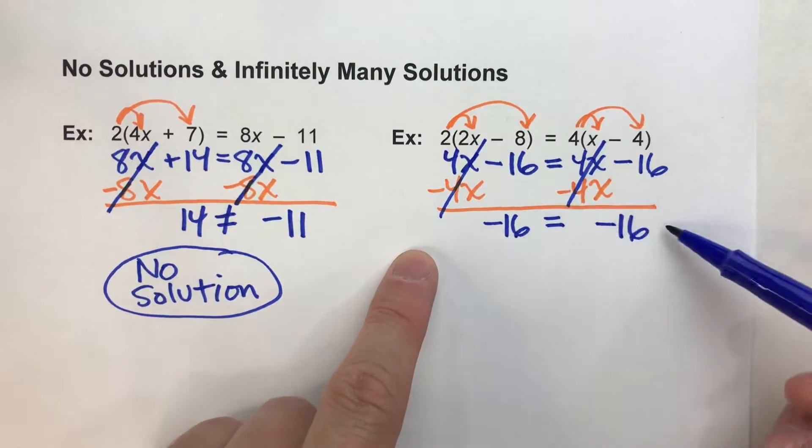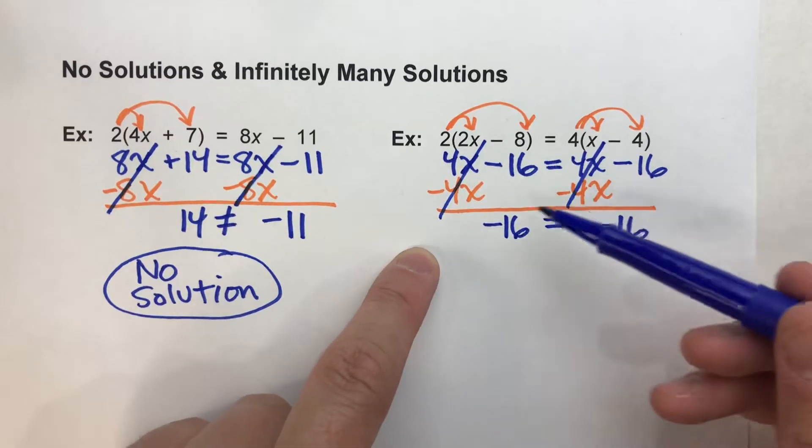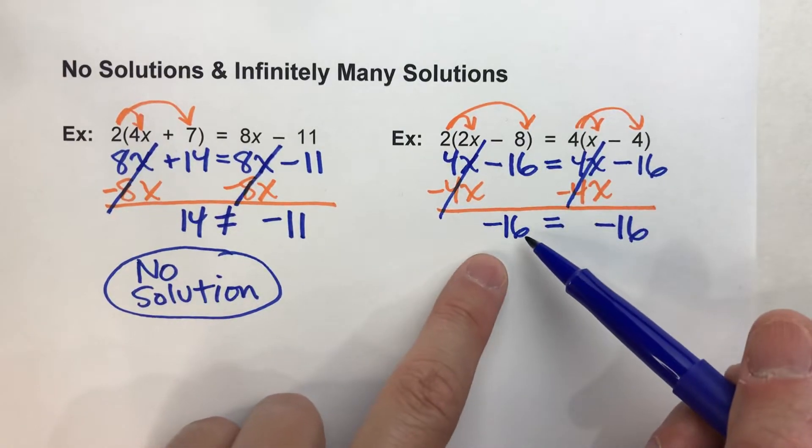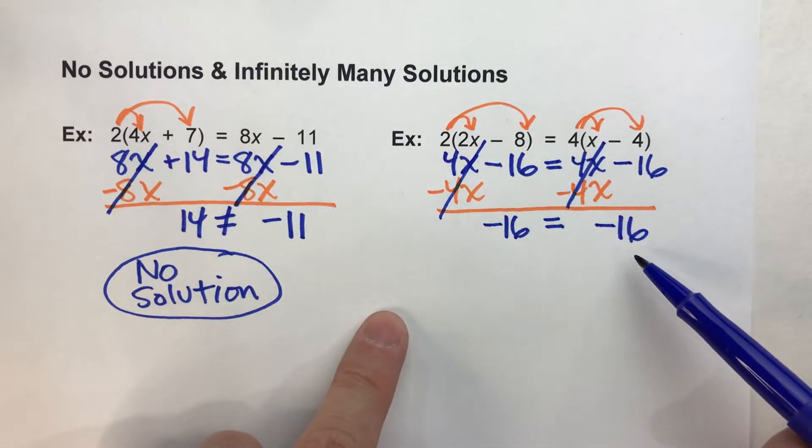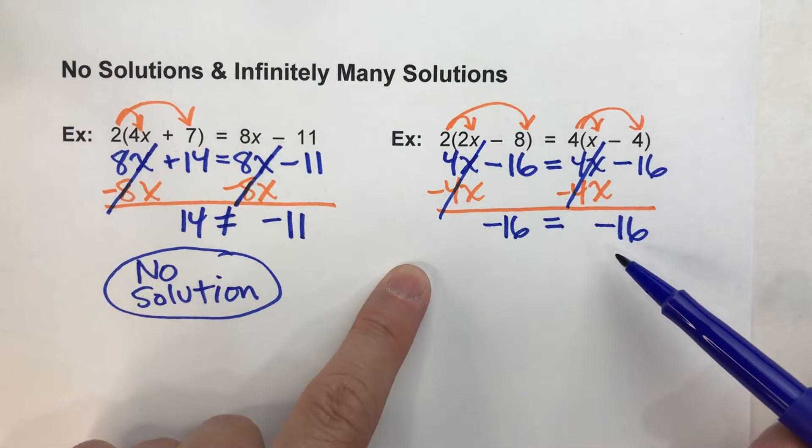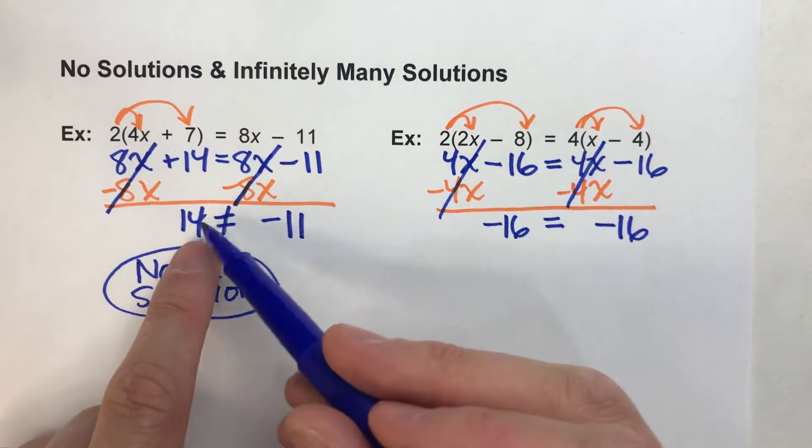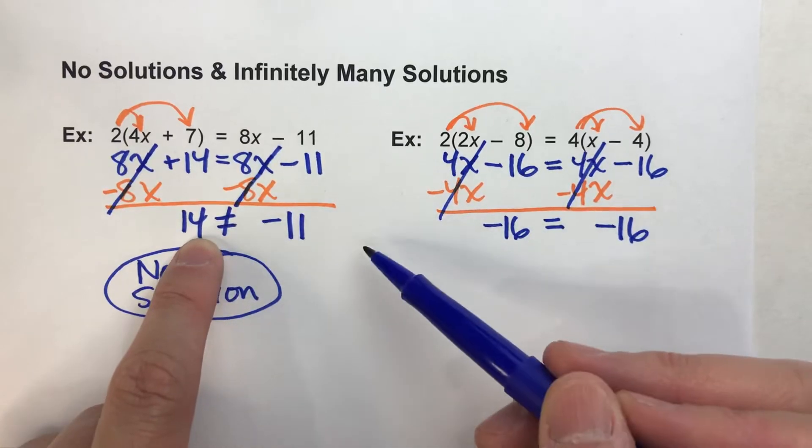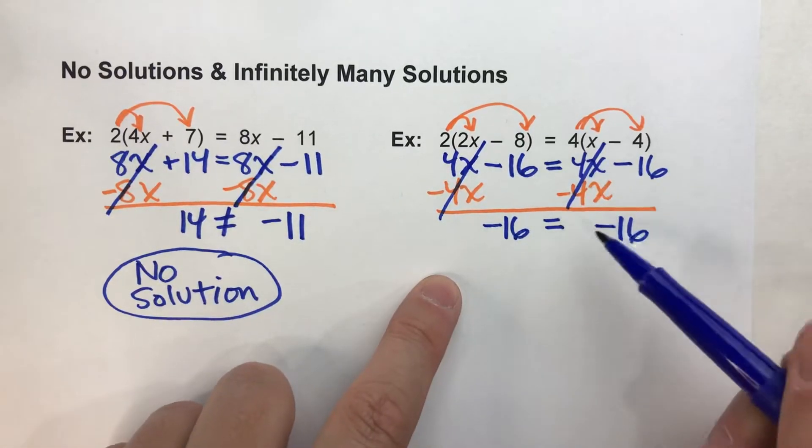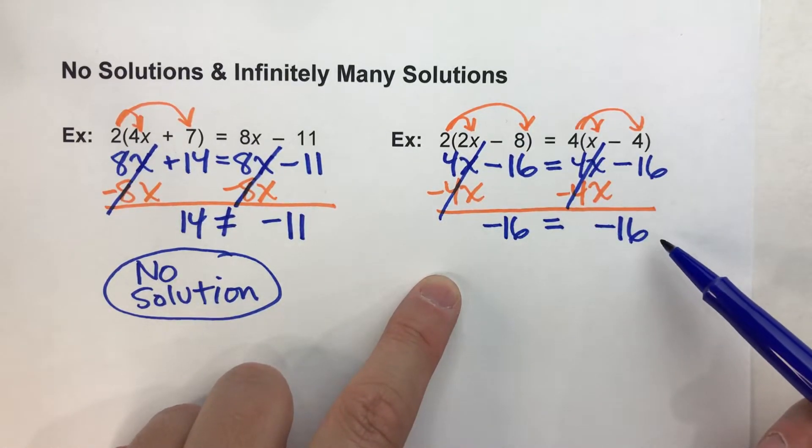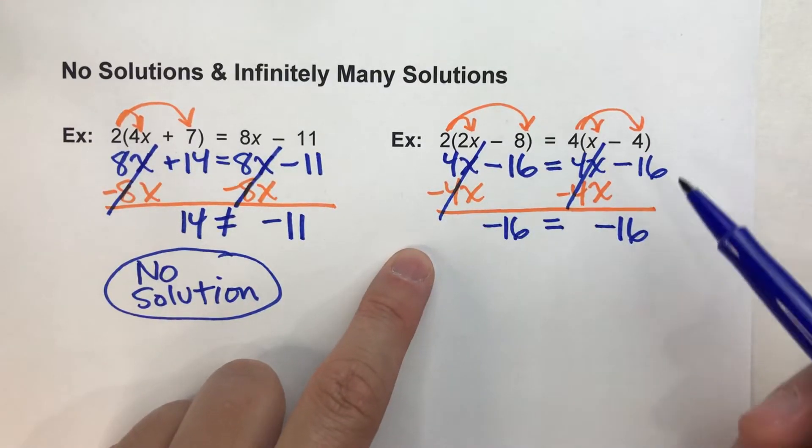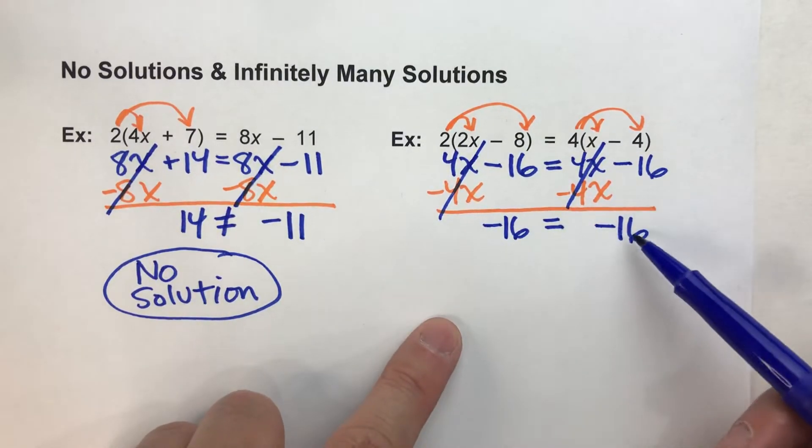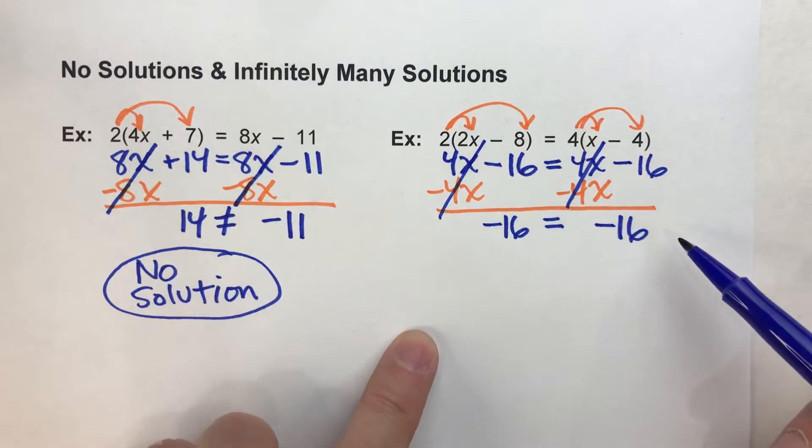Again, we have a situation where there's no x's. But this time, look at what the statement says. Negative 16 equals negative 16. Now that's a true statement this time. Unlike before where it contradicted itself, 14 can't equal negative 11. This time, yeah, negative 16 does equal negative 16. There's no variables left. It's only this number is equal to itself. That's a true statement.